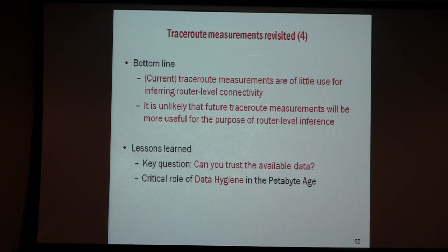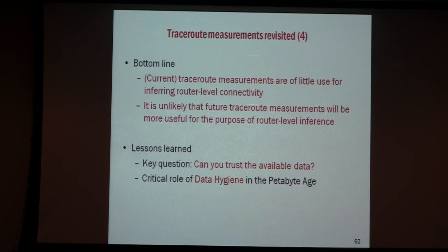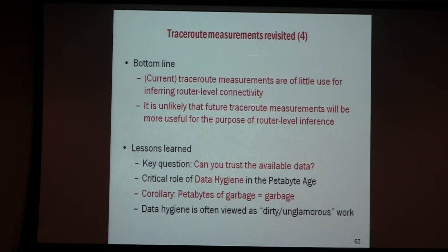Traceroute will always be a key element of any mapping effort, but by itself it is useless. The lesson learned here is: when somebody gives you a data set, always ask how good it is. NSF is big on big data — a proposal has to have the notion of petabyte data somewhere in it. But if you have a petabyte of garbage, you still have garbage. This traceroute data for mapping purposes is an example. Doing this dirty work does not get you into Science or Nature — that is the problem — but somebody has to do it.